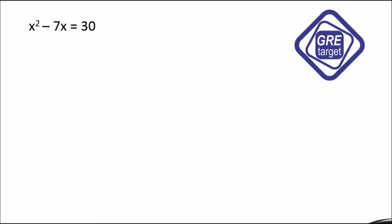Hello friends, welcome to GRE Target. Our today's topic is GRE polynomial. Suppose our equation is x² - 7x = 30. Let's rewrite it — after rewriting we will take 30 to the left hand side, so it will become negative: x² - 7x - 30 = 0.